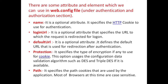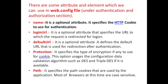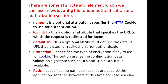There are some attributes and elements we can use in the web.config file under the authentication and authorization section. The 'name' attribute is optional — it specifies the HTTP cookie to use for authentication. If you are running multiple applications on a server, you will require a unique cookie name in each web.config file for each application. The 'loginUrl' attribute is optional — it specifies the URL to which the request is redirected for logon. If your login page is login.aspx and no valid cookie is found, it will automatically redirect to login.aspx.